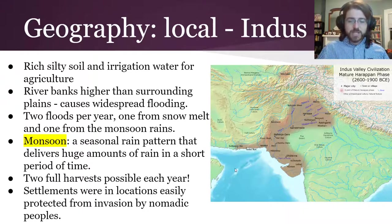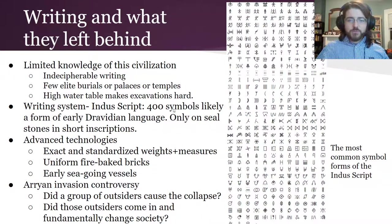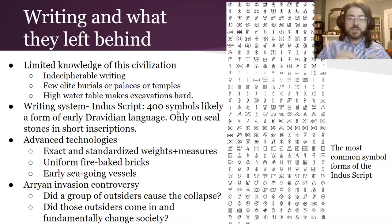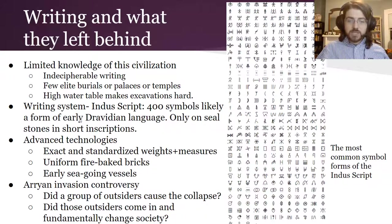They were also able to build settlements in locations easily protected from invasions by nomadic peoples. However, we have very limited knowledge of this civilization because we cannot read their writing. There are about 400 symbols in this early language, but we only have them on small seals with just a couple of symbols each, and there's no Rosetta Stone equivalent to help decode it. We also don't have many elite burials, palaces, or temples, and high water tables make archaeological excavation very difficult. This early language appears related to Dravidian languages like Tamil still spoken in southern India today.